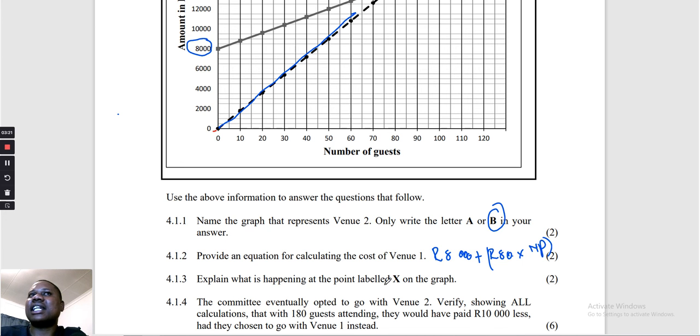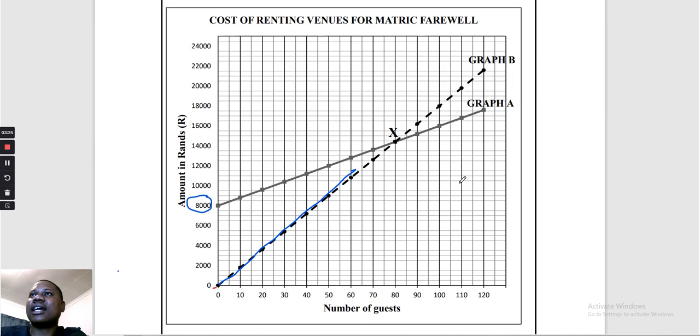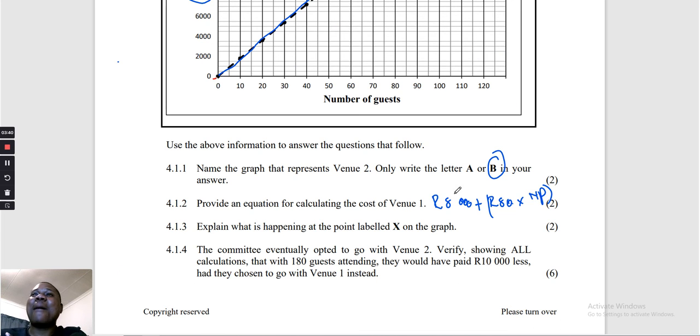Explain what is happening at the point labeled X on the graph. Here is the X. Remember when you look, you go to the income and expenditure, and then the graph on top is going to be the income, this one is going to be the expense. This label here, it was going to be a break-even. But then here they say explain what is happening. What is happening is that the cost for venue one and venue two are equal for same guest.